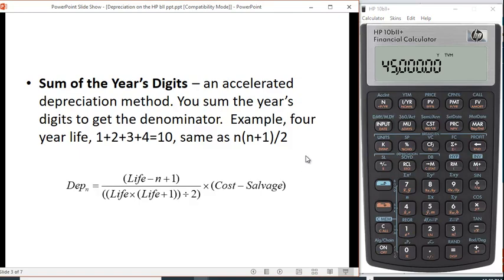The second method is what's known as the sum of the year's digits. This is an accelerated depreciation method, which means that you're going to depreciate the asset at a higher rate in the early years and at a lower rate in the later years. So it's a little complicated formula. This part right here is the rate at which you'll depreciate, and the denominator is the sum of the year's digits. So if the investment lasts for four years, it's 1+2+3+4, which equals 10.